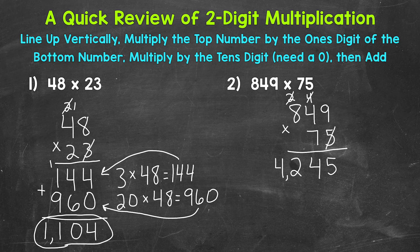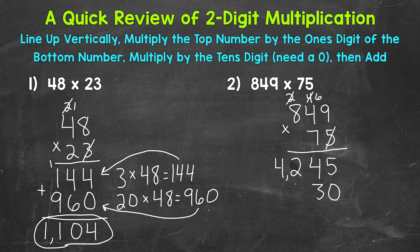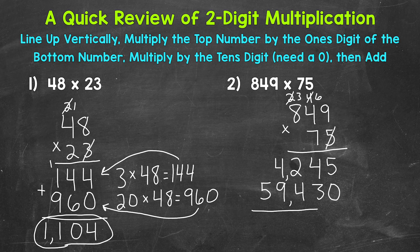Now we move to the tens place of the bottom number — the seven — and multiply that by the top number. We're in the tens place, so that has a value of 70, and we need our zero. Seven times nine is 63 — carry the six. Seven times four is 28 plus six is 34 — put our four, carry the three. Seven times eight is 56 plus three is 59 — put our nine, bring the five straight down. So 70 times 849 is 59,430.